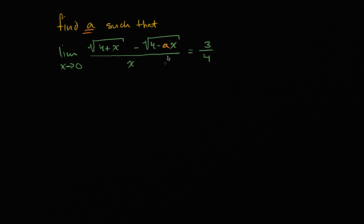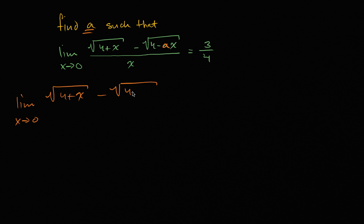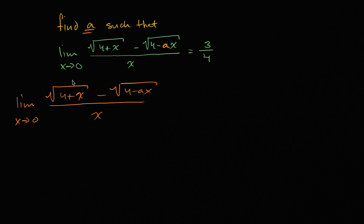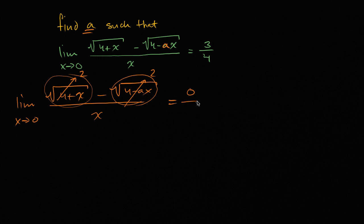Assuming you have had your go, let's do this together. When you try to superficially evaluate this limit — if x approaches zero, substituting x equals zero — the square root of four plus zero is just the principal root of four, which is two. And no matter what a is, a times zero is zero, so the square root of four minus ax is also the principal root of four, which is two. So you get two minus two over zero — an indeterminate form.